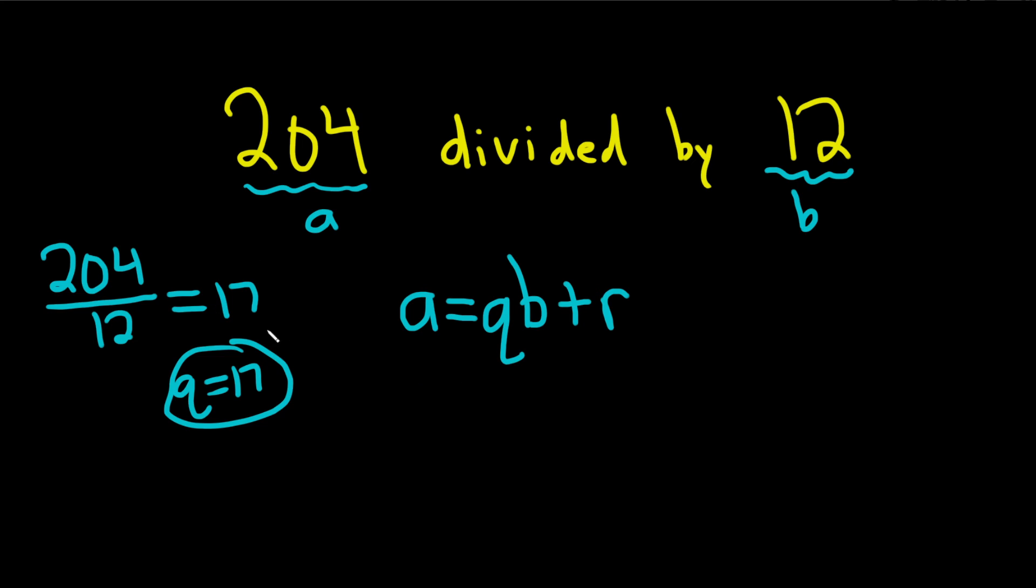And then R is going to be zero. But if you want to check, you can just take everything and plug it in. So this will be 204, that's your A. Q is 17, and we said B was 12.